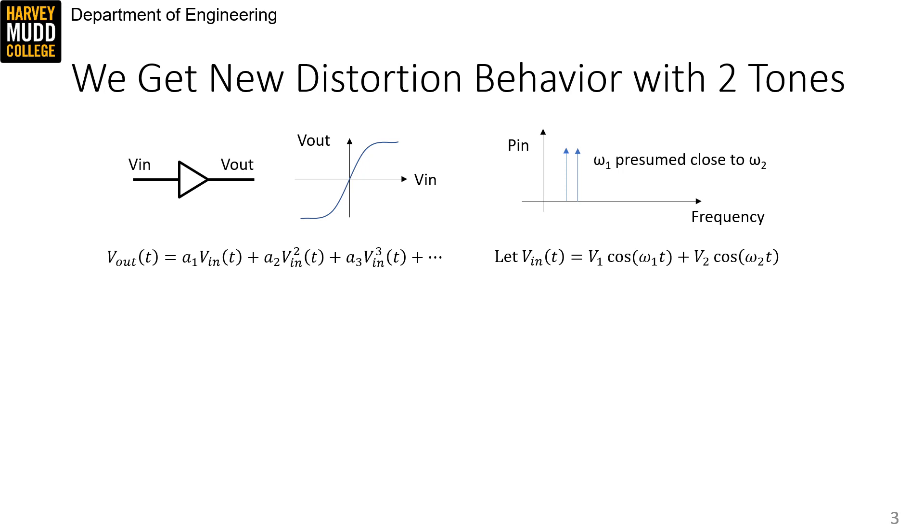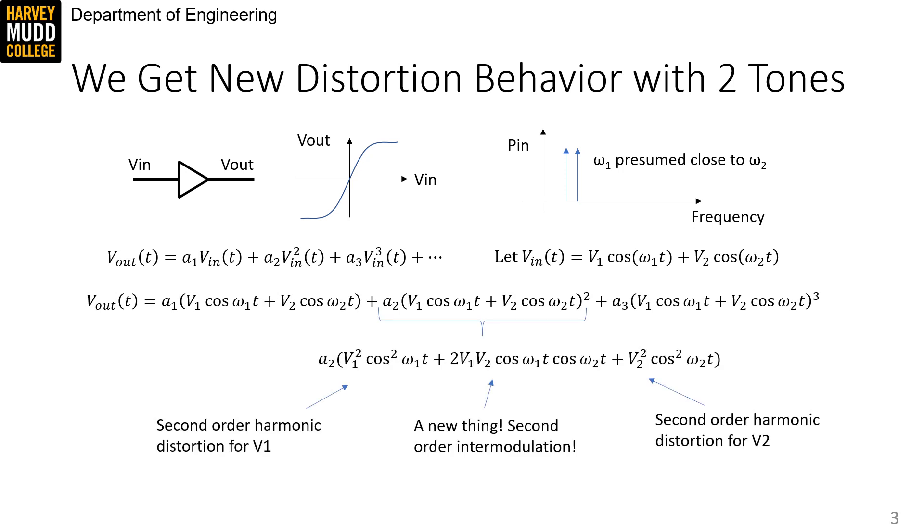We can substitute this input into our nonlinear amplifier model, and if we focus on the second-order term of the model, we can expand that term into a polynomial. We find that two of the terms in the polynomial are familiar. They look like the second-order harmonic distortion that we'd expect to see from each of the V1 and V2 tones.